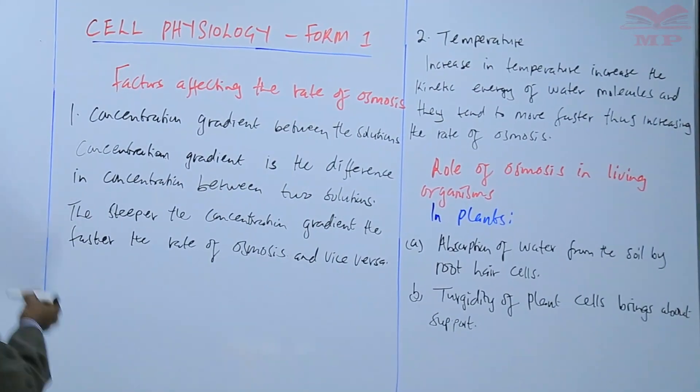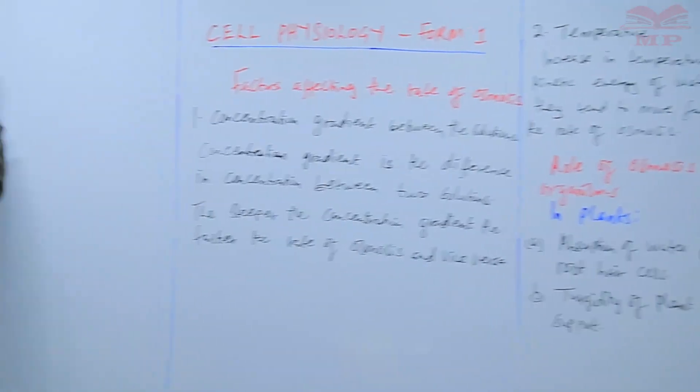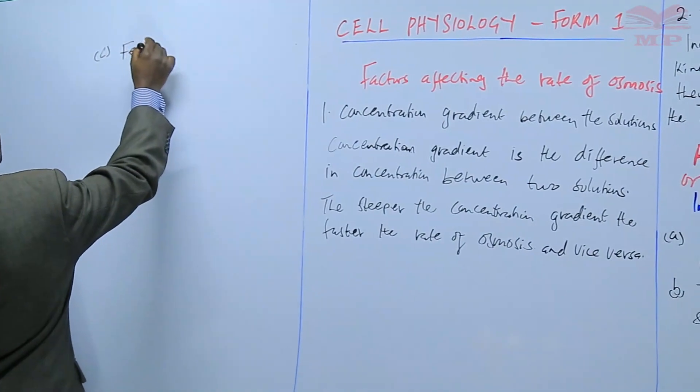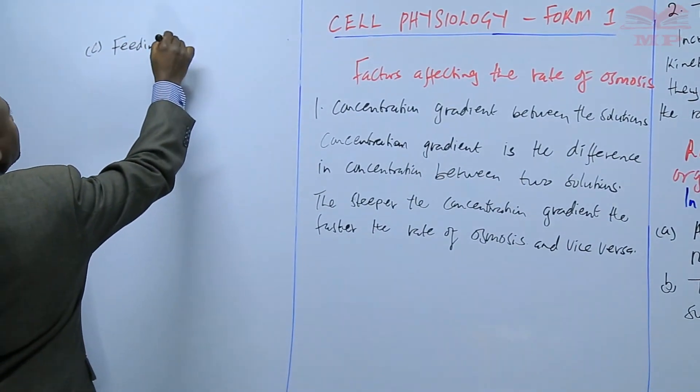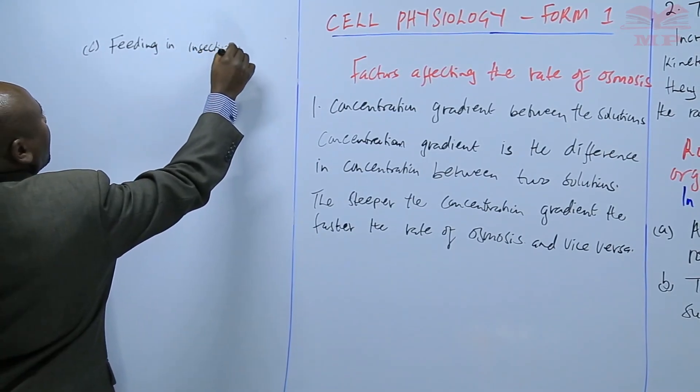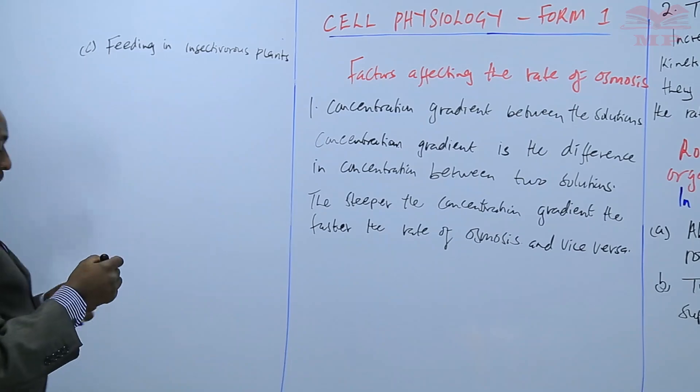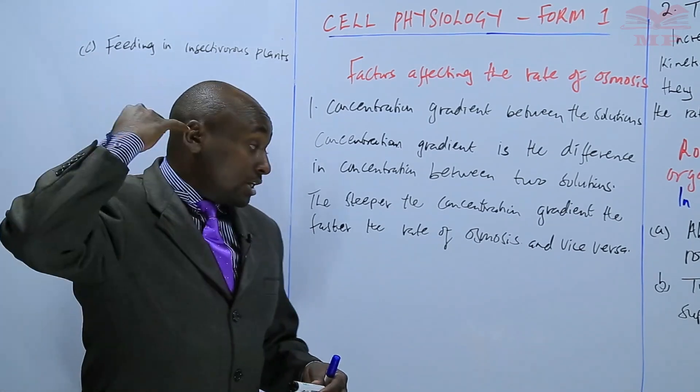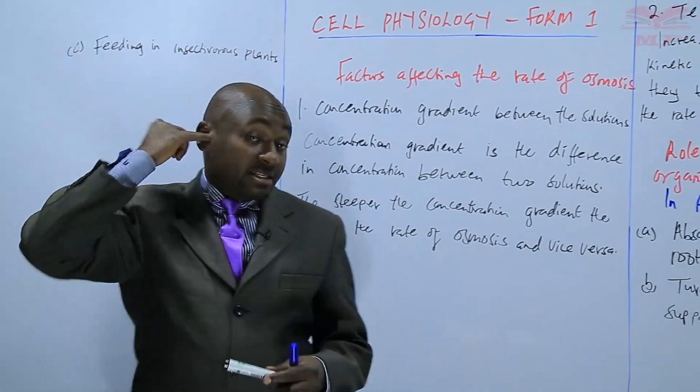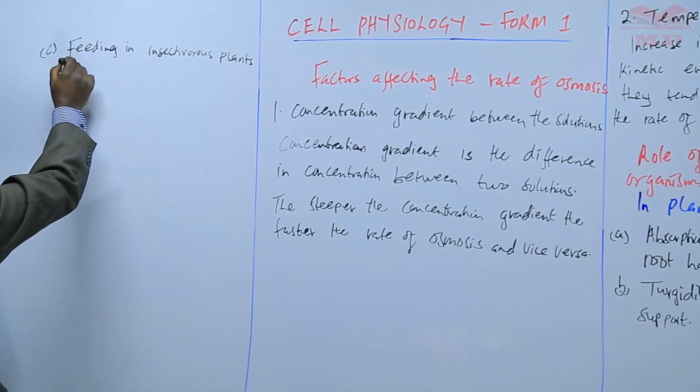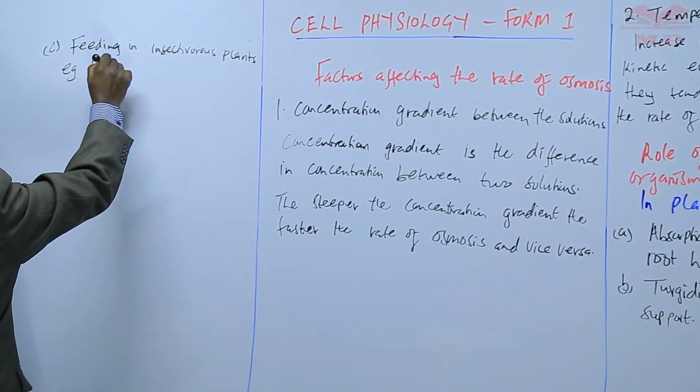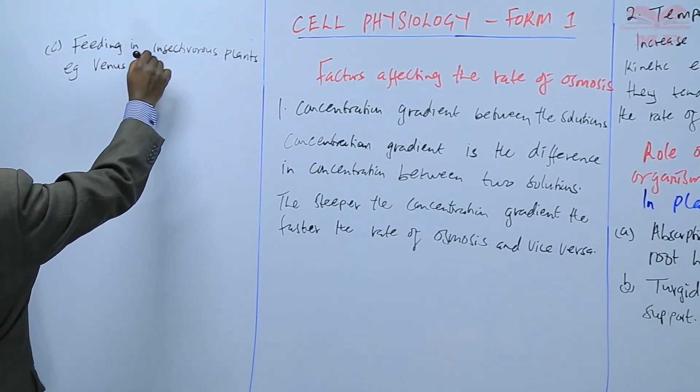Next, we have feeding in insectivorous plants. Insectivorous plants are those plants that feed on insects. You can have an example, e.g. something like Venus flytrap.